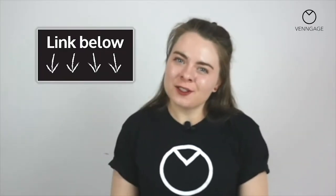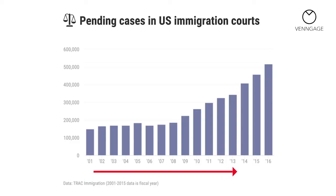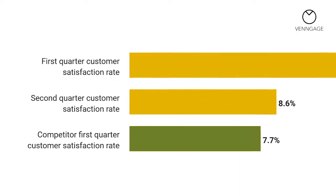I'll link to that study in the description box if anyone's interested. Bar charts and column charts can pretty much be used interchangeably. The only time it would be better to use a column chart is if you want to show changes over time. Meanwhile, bar charts are good for when you want to add long, detailed labels to your bars, because they afford you enough space to do that.